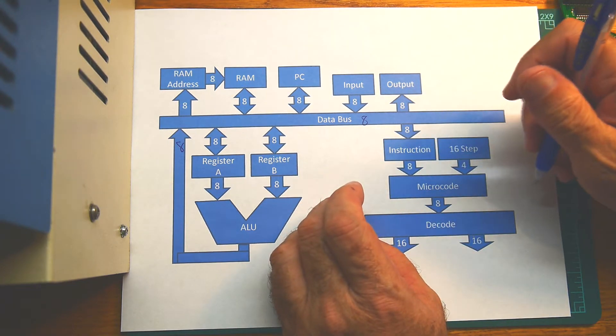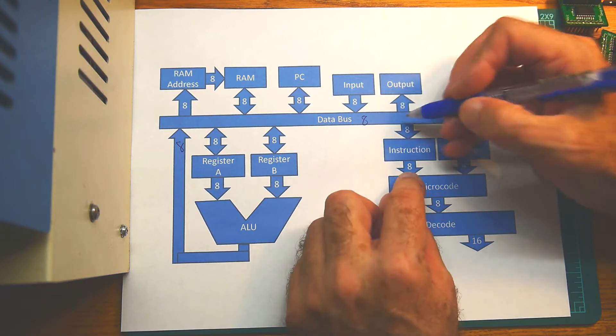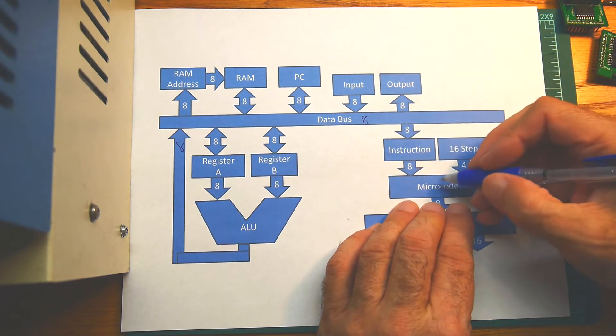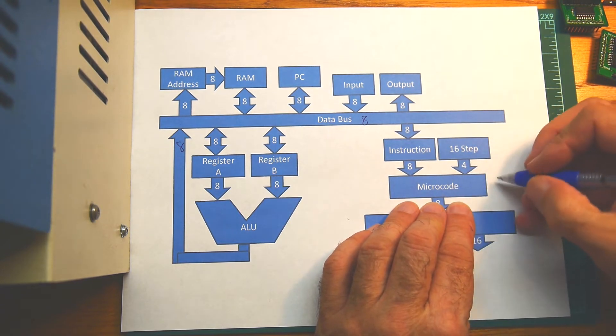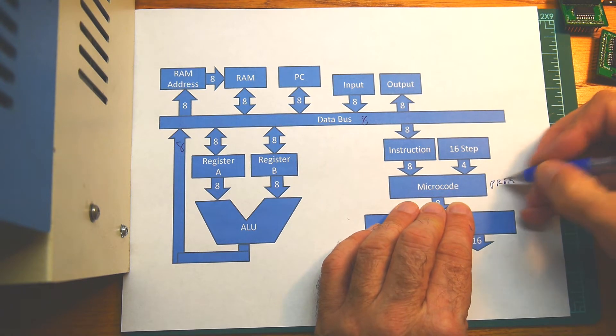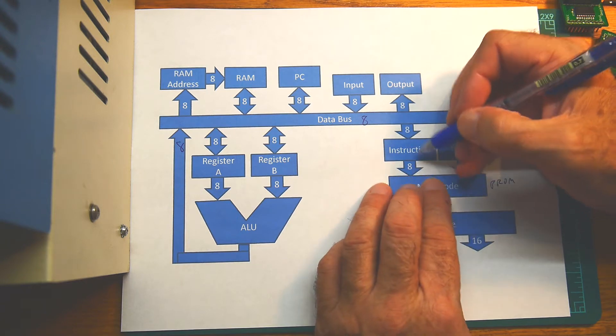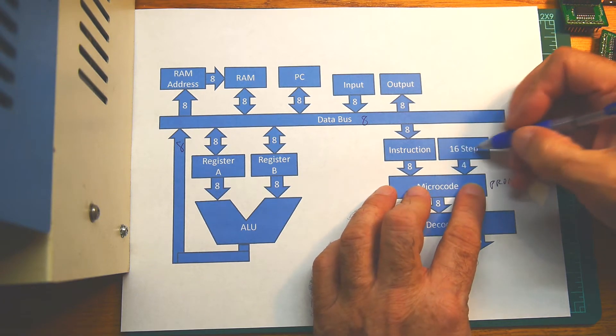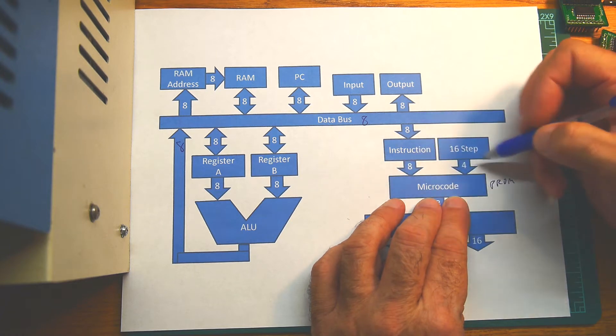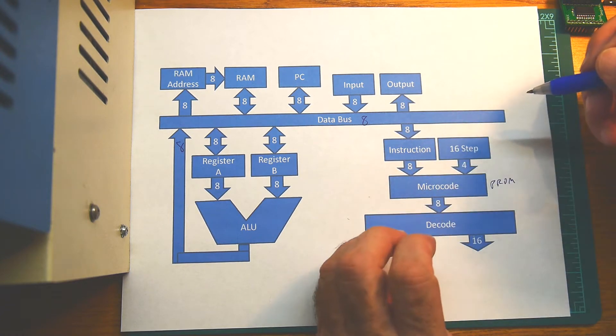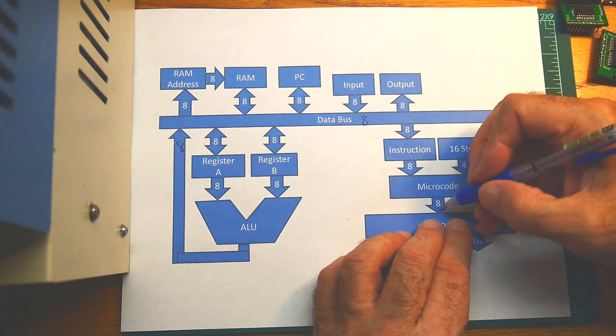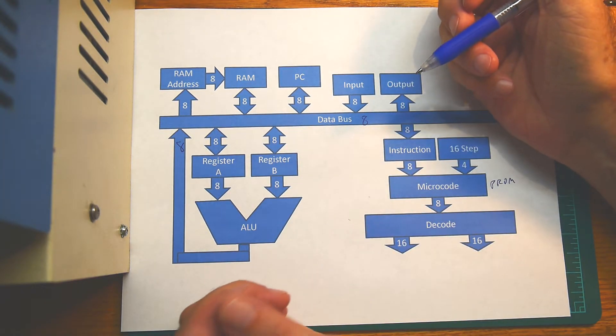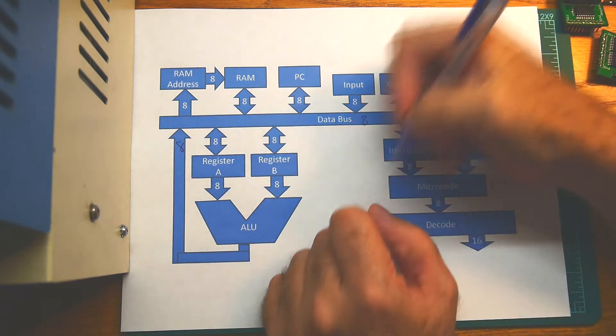And then we have our microcode board. So we can load an instruction, and that instruction then supplies an address to the PROM. This is a programmable read-only device. We get eight bits from the instruction and then we get another four bits from our counter, so we can have 16 micro-steps inside of an instruction. So we have a 12-bit address into the PROM. The PROM outputs eight data lines which are then decoded into 16 and 16.